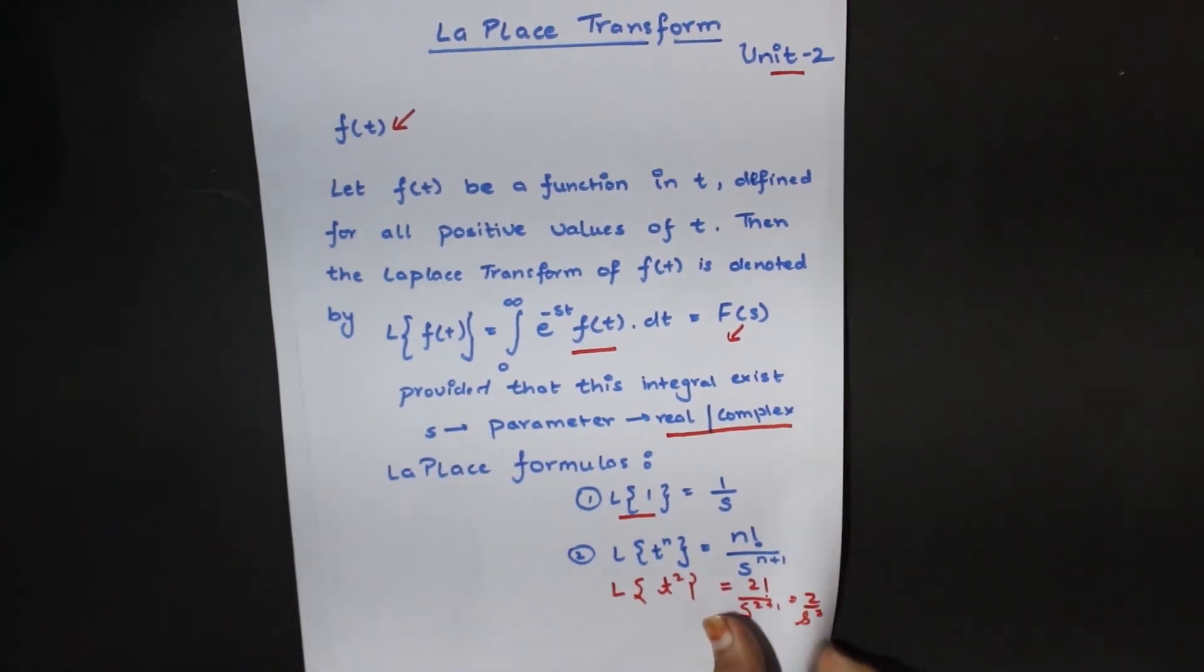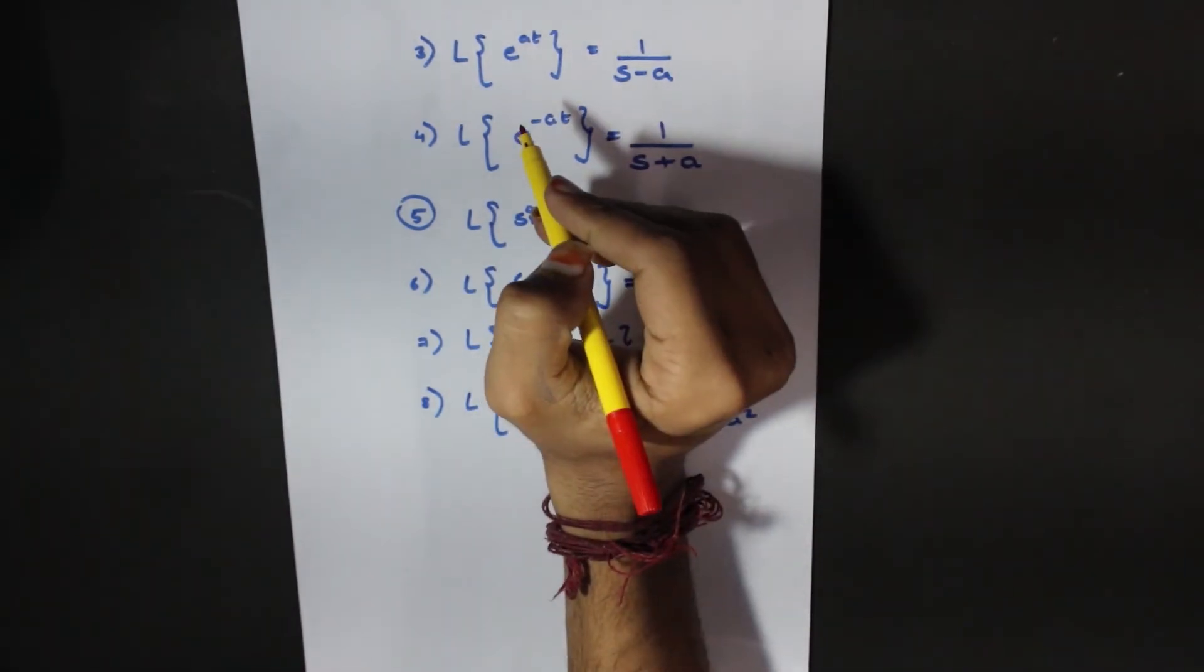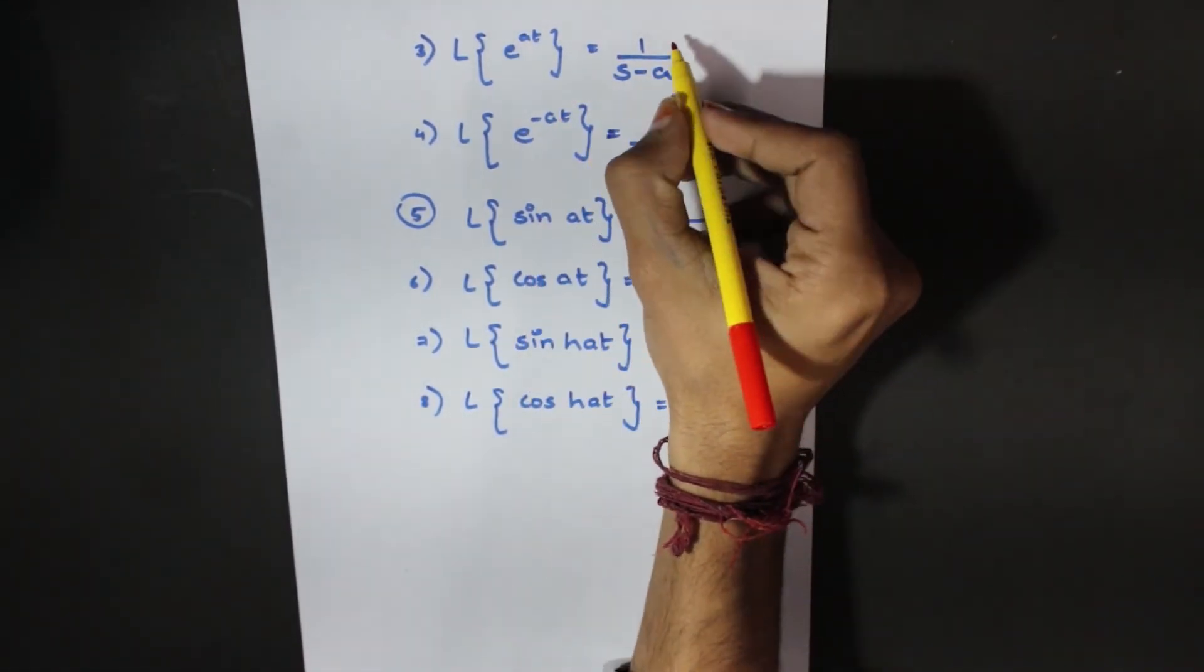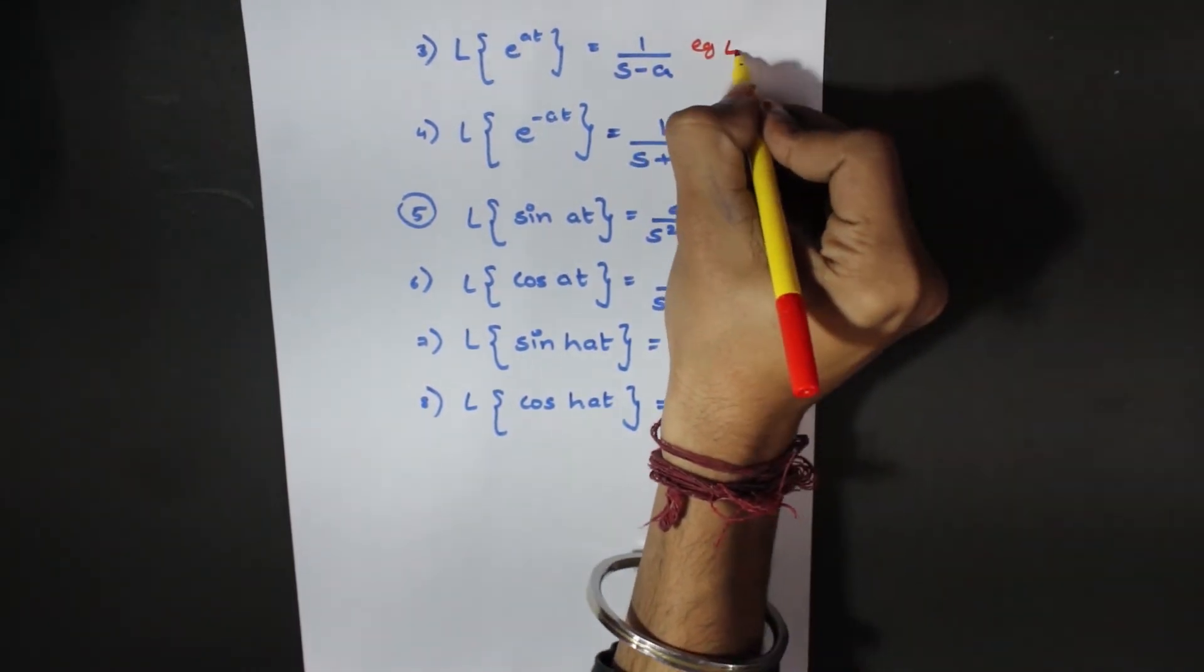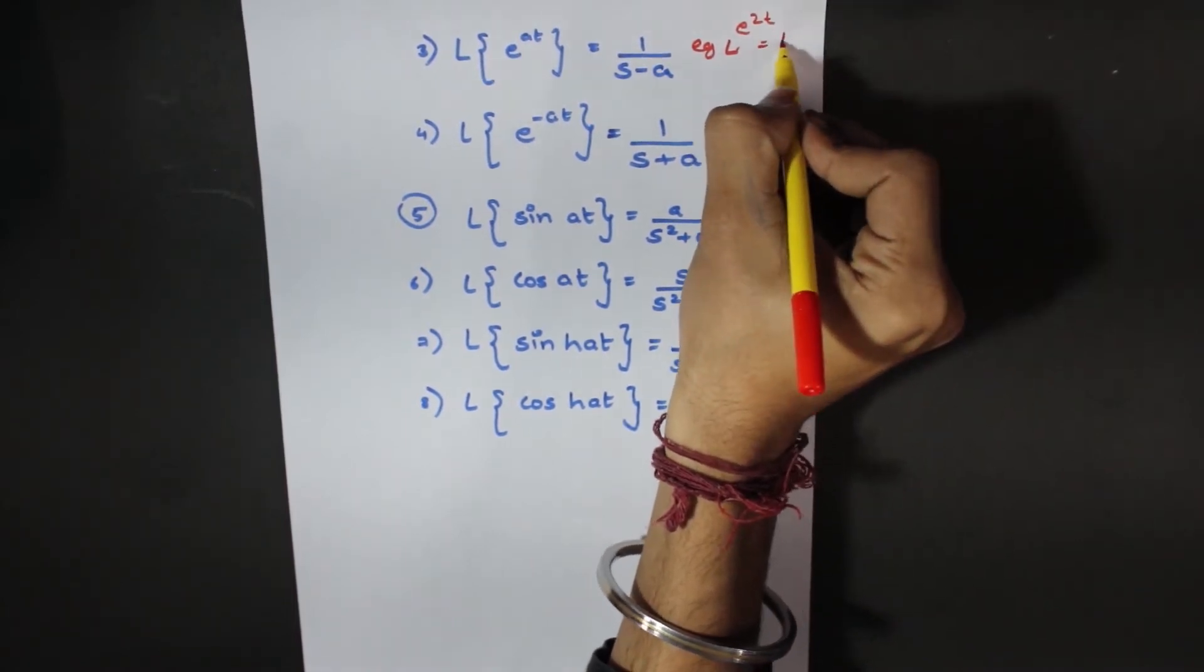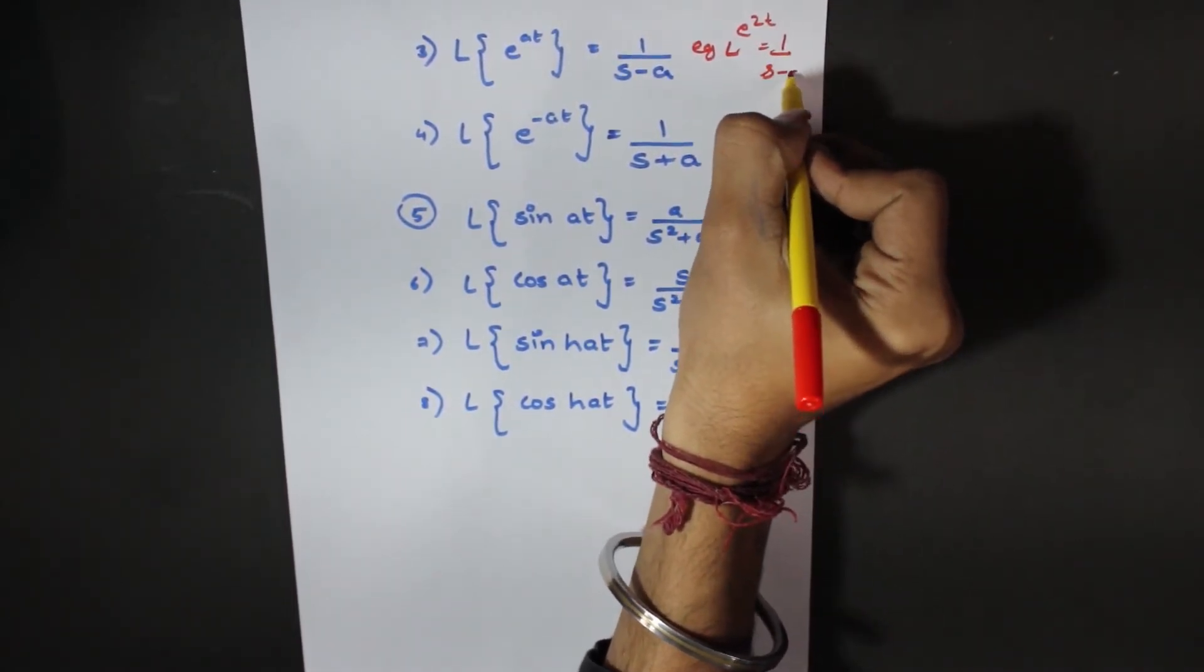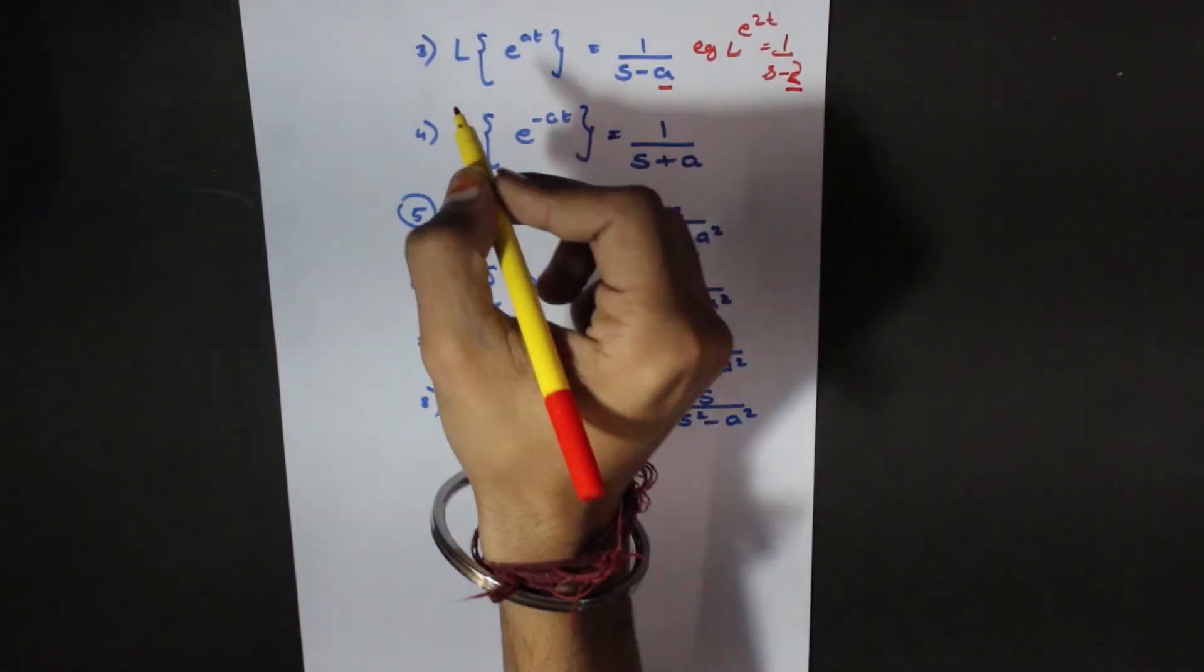Now we have to look at the next formula. This is Laplace of e to the power at. This is 1 over s minus a. Because we have to replace a here and we have to apply the formula.